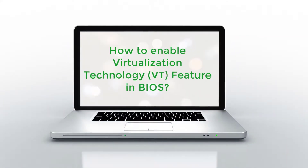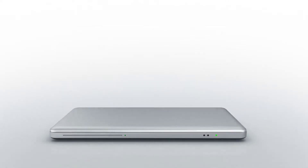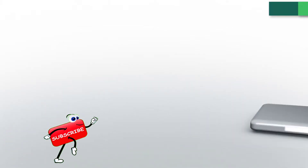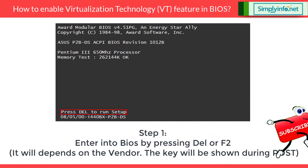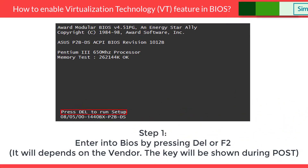How to Enable Virtualization Technology Feature in BIOS. Step 1: Enter into BIOS by pressing DEL or F2 during the computer start. It will depend on the vendor. The key will be shown during the POST.